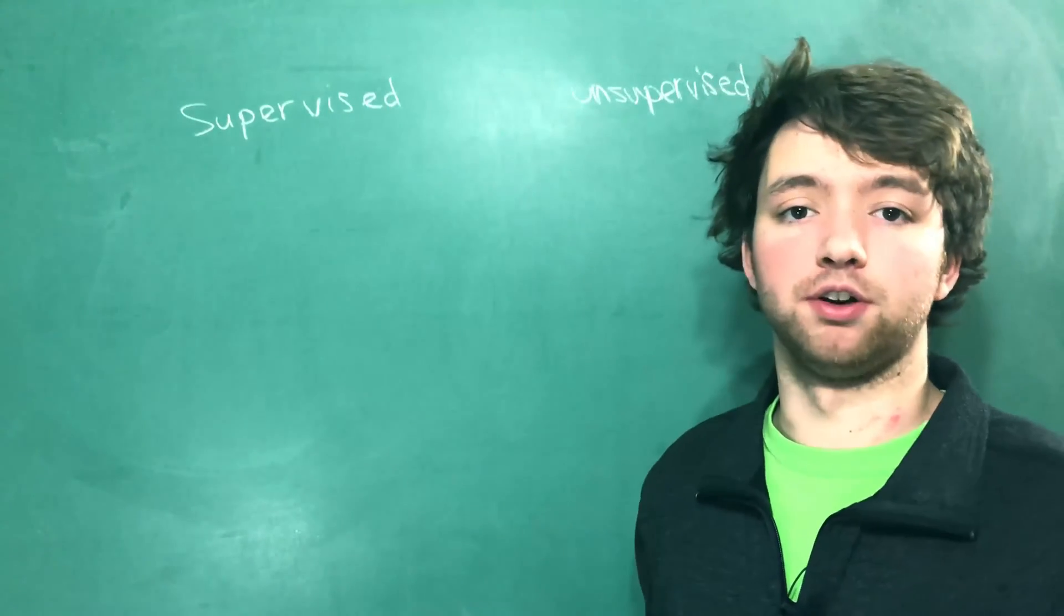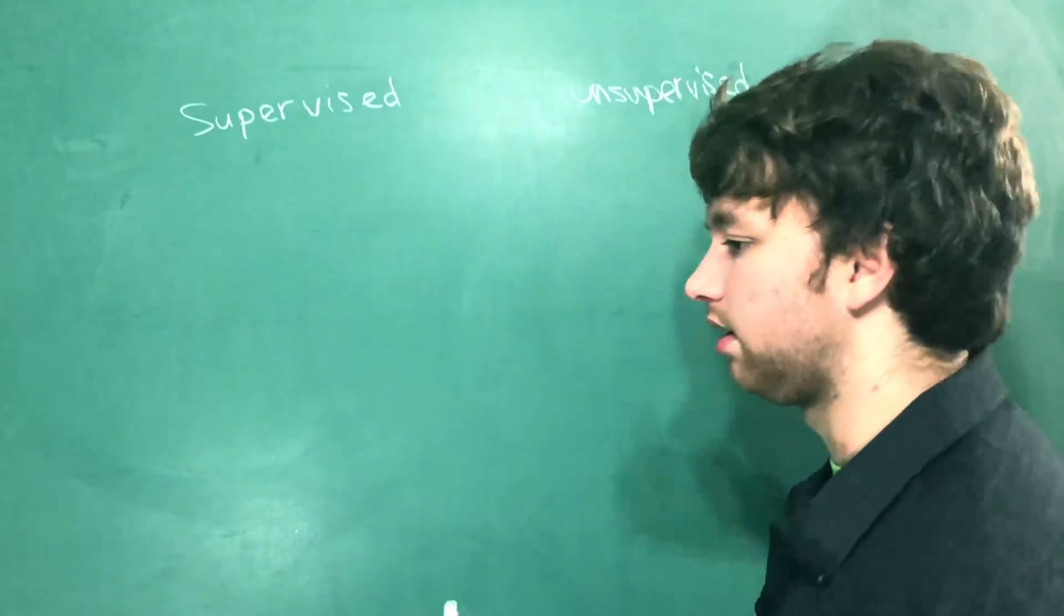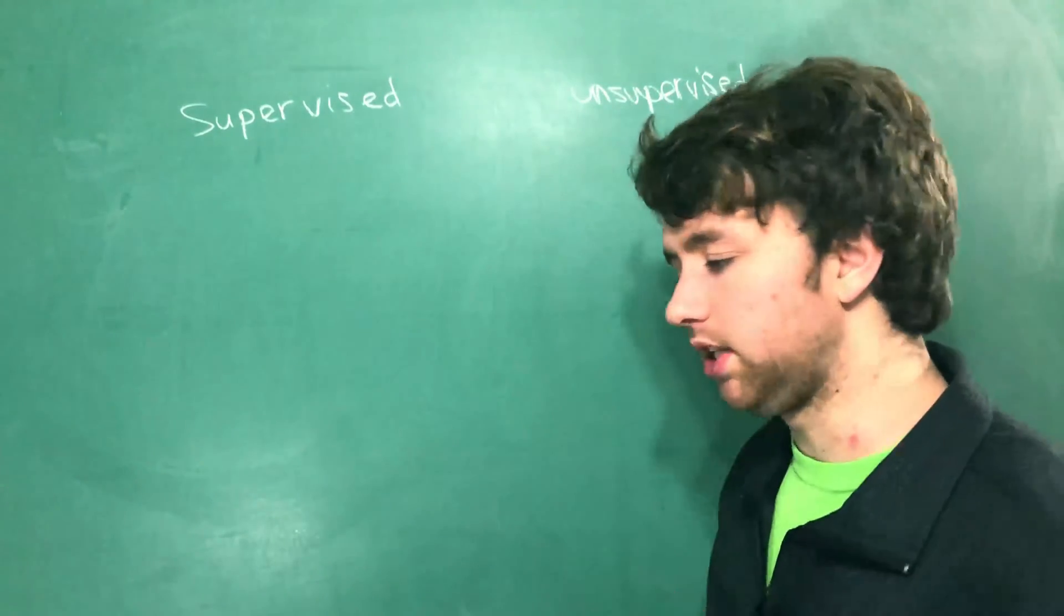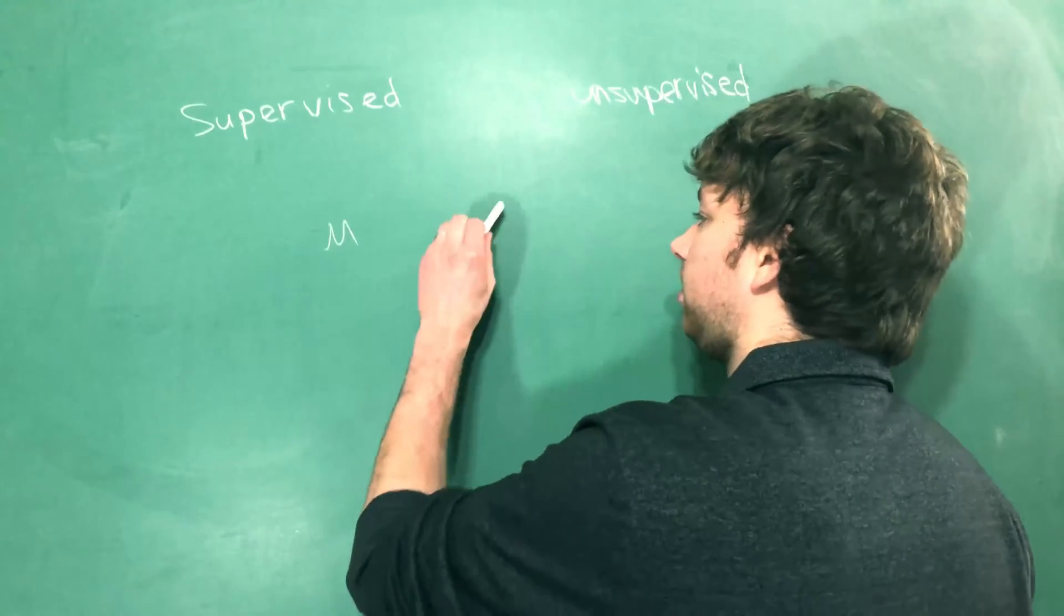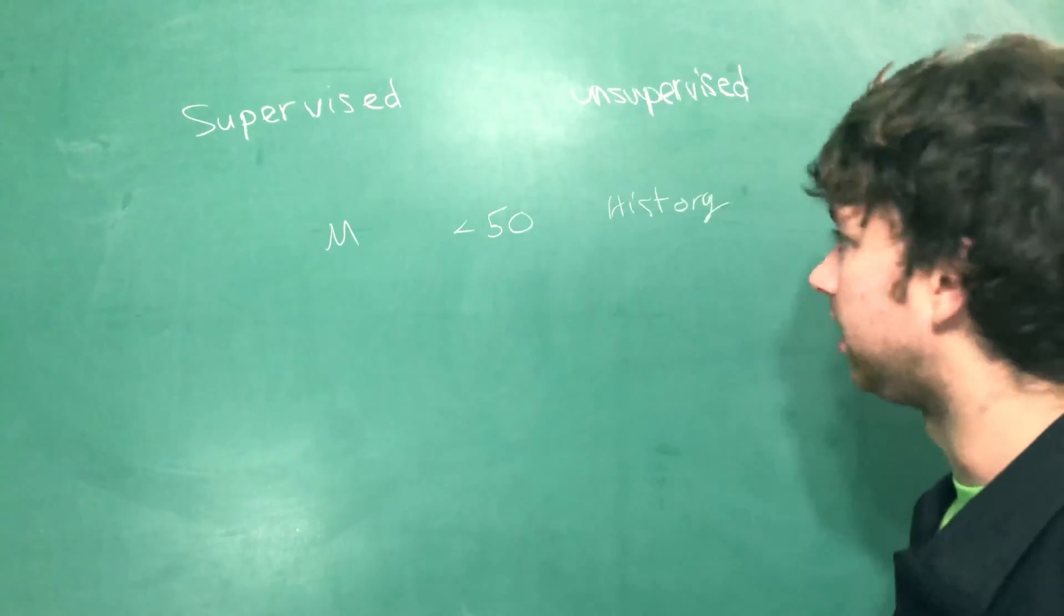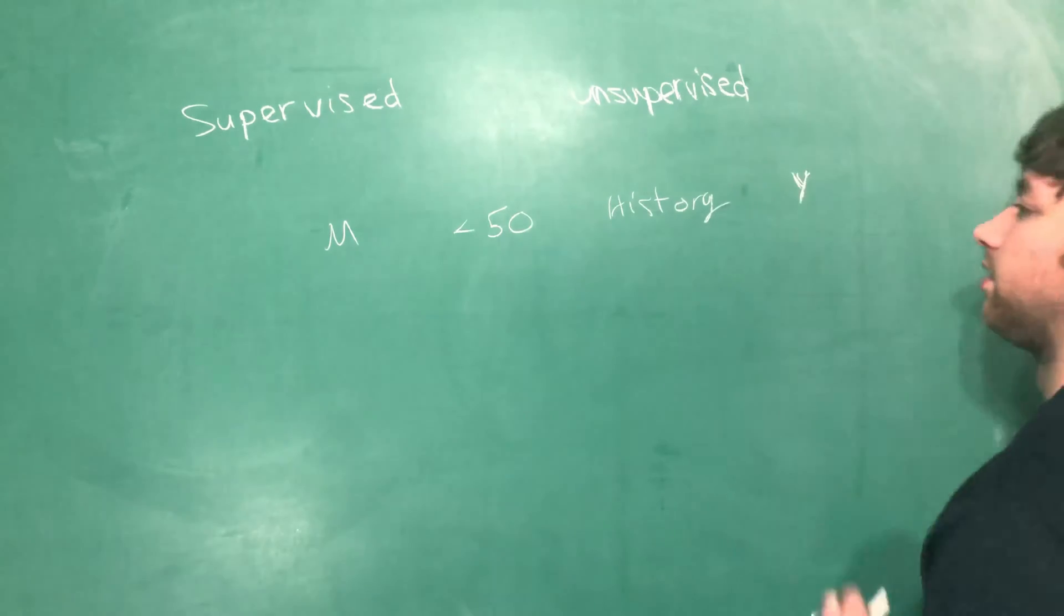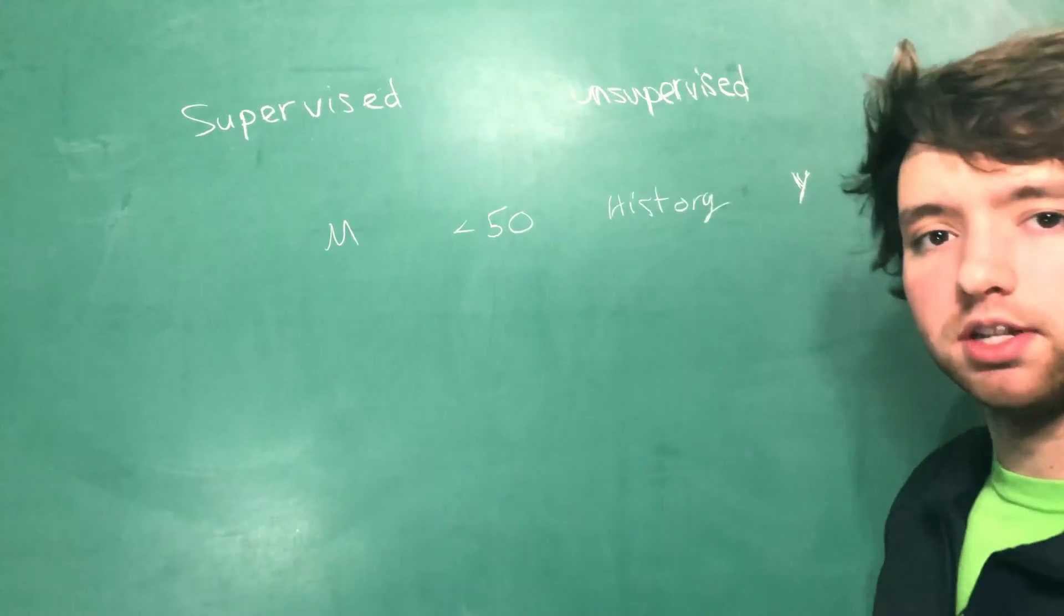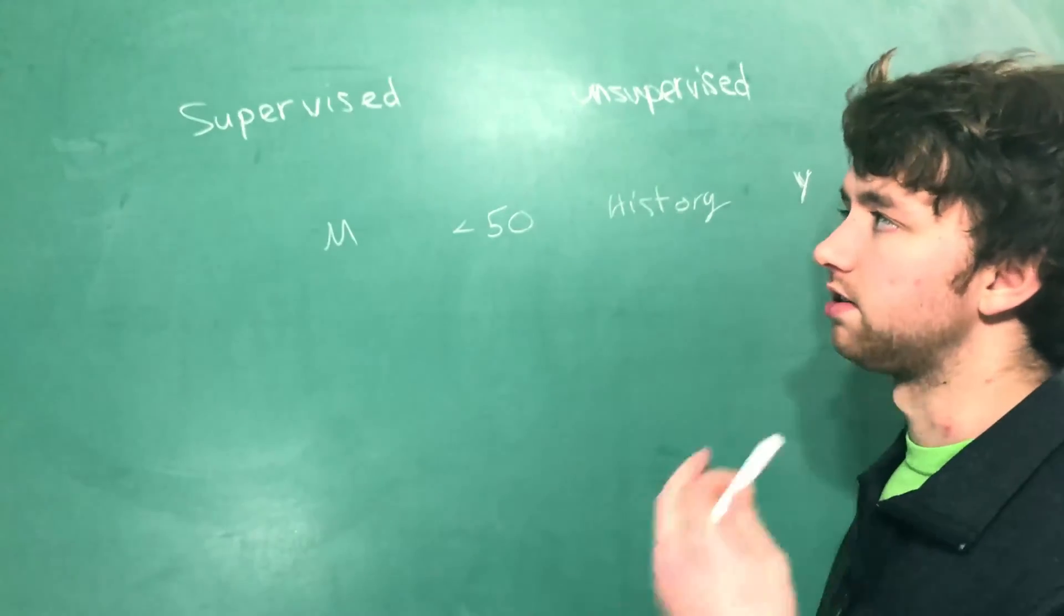Thinking back to our example of whether or not someone has diabetes, we have this data set and part of that data set is complete. So we have a bunch of historical data and we can say someone's a male, they're less than 50 years old, and they have a history of diabetes in their family, and this person ended up having diabetes. We can use this as our learning for our supervised algorithms.